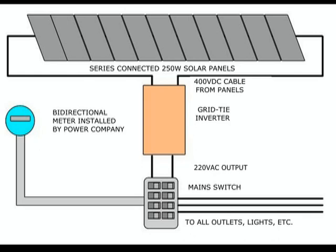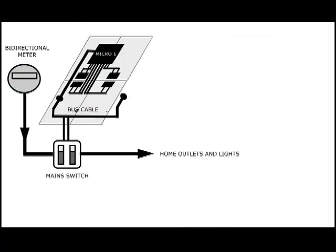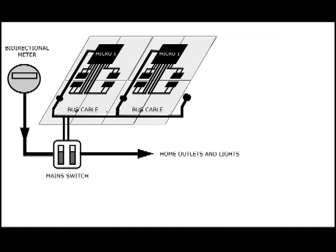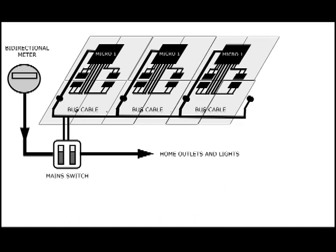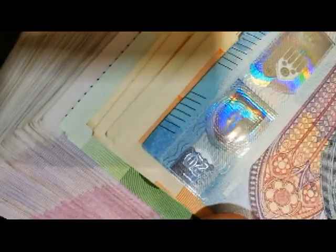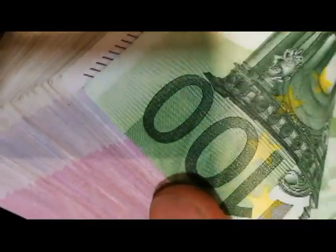While a central inverter installation requires a specific design as to size, an installation using micro inverters can be started with as few as four panels and one micro inverter. You can add new kits of four panels with their corresponding micro inverter as required, without paying for the total installation all at once.